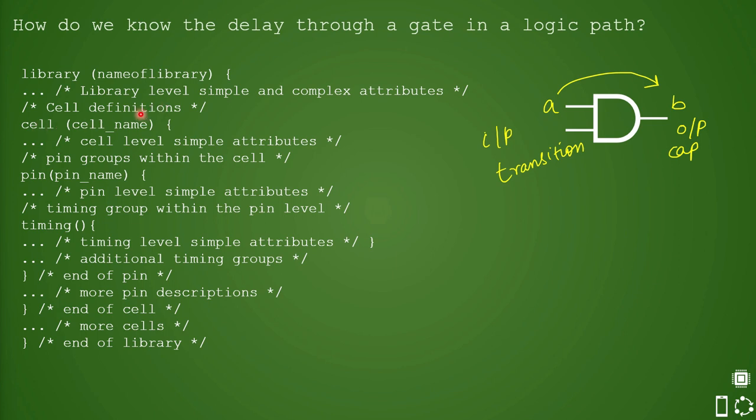First we define the cell. The syntax is cell, then the cell name, then simple attributes will come. Then each individual pin of cell is defined inside this cell. We specify pin, then pin name, then the attributes of pin, and then comes the timing data. This is the most important part of the library where you specify the delay values for that particular pin.